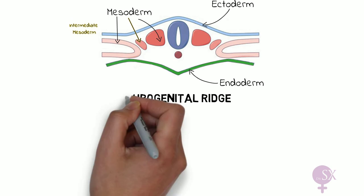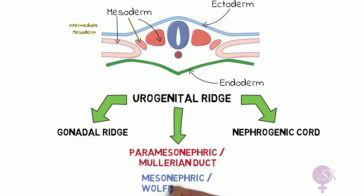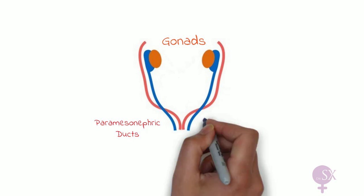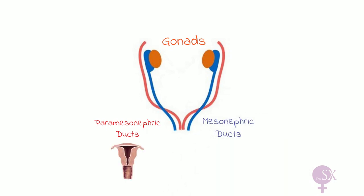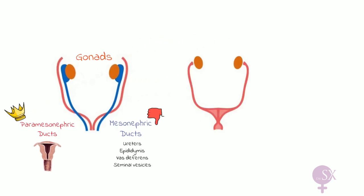The urogenital ridge is divided into the gonadal ridge (giving rise to the ovaries or testes), the nephrogenic cord (giving rise to the kidneys), and the paramesonephric or Müllerian ducts, and the mesonephric or Wolffian ducts. The paramesonephric ducts give rise to the fallopian tubes, uterus, and upper two-thirds of the vagina, while the mesonephric ducts give rise to the ureters, epididymis, vas deferens, and seminal vesicles. In females, hormones cause the paramesonephric ducts to persist and the mesonephric ducts to regress. The paramesonephric ducts grow and fuse in the midline at around 10 weeks, initially with a septum, which is then resorbed at around 20 weeks.